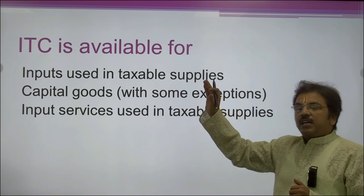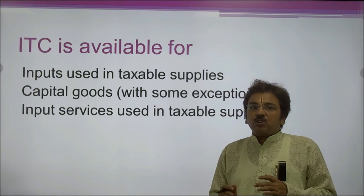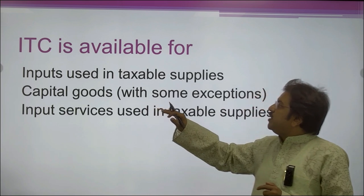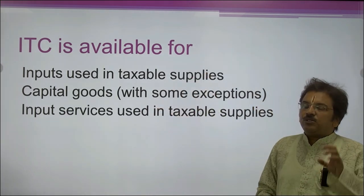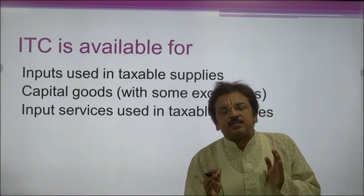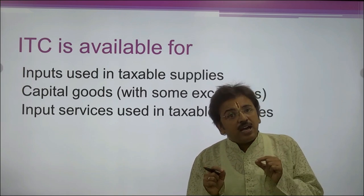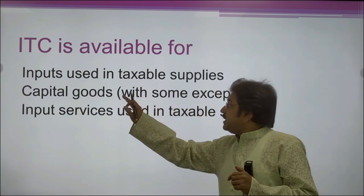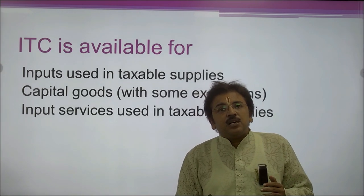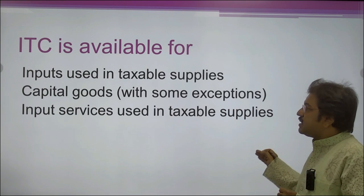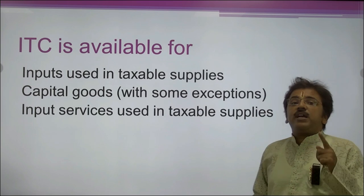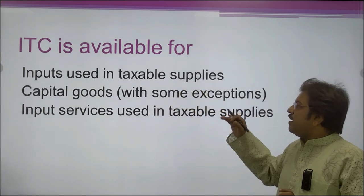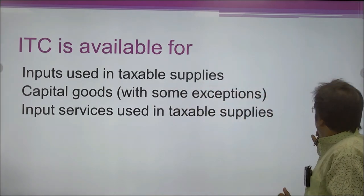Now let's see the areas in which input tax credit is available. First, it is available on all taxable supplies — all products kept in the taxable zone are considered. Second, capital goods with some exceptions are also considered. Third, input services used in taxable supplies are included. So input tax credit is available when you have taxable supplies, capital goods, and taxable uses — these are the three categories where ITC applies.